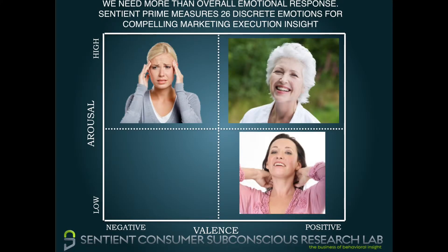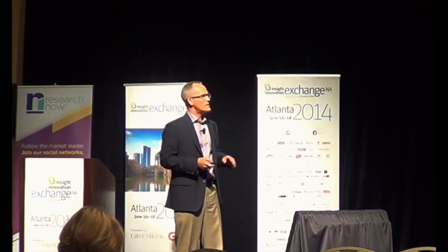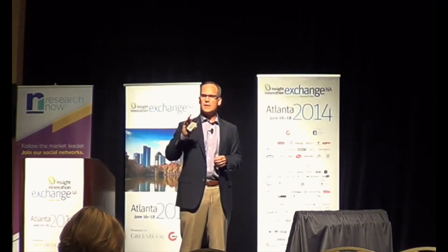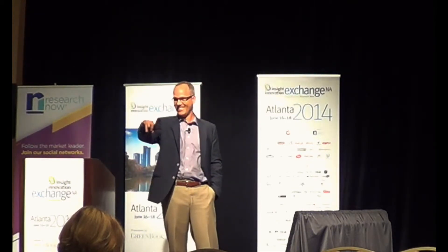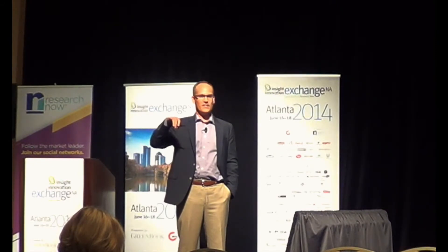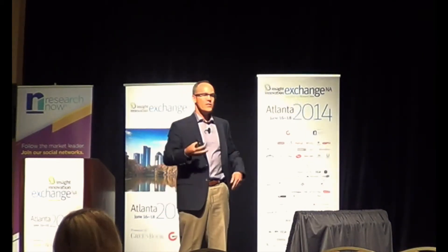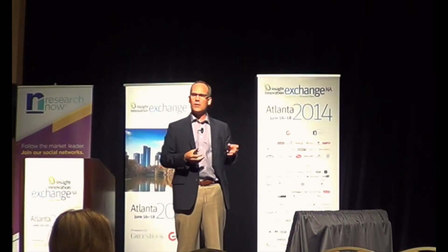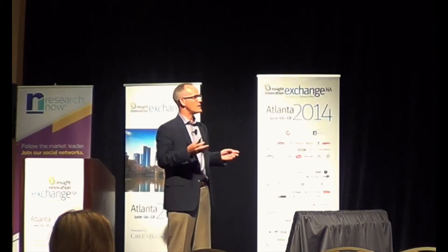The lower right-hand quadrant might be an example of relief. It's positive in valence, low in arousal, but it's different in nature than a steady state of calm. Relief is literally a lifting of the shoulders — it's the opposite of anxiety. Can anybody think of a product or brand that might be in the business of providing relief? Pharma — a great example, literally and figuratively. A laxative — another great example. Insurance, for example. Those brands and categories need to evoke that specific emotion in their target audience to be effective. That's different than producing a steady state of calm where everything is right in the world.